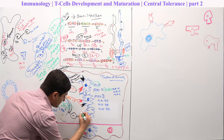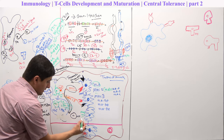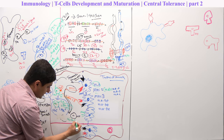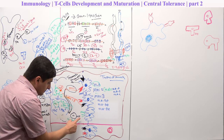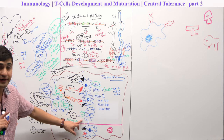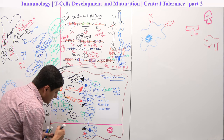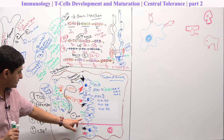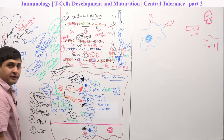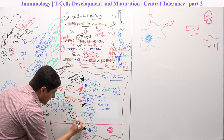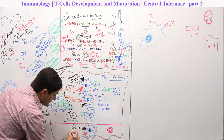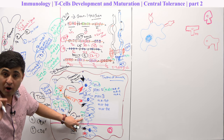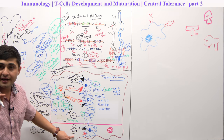The thymic epithelium is showing both MHC1 and MHC2. If this cell weakly recognizes MHC1 — if it weakly recognizes — this cell is selected. This is called positive selection. If these T cells weakly recognize MHC1, then this T cell is selected and it will be a positively selected cell.